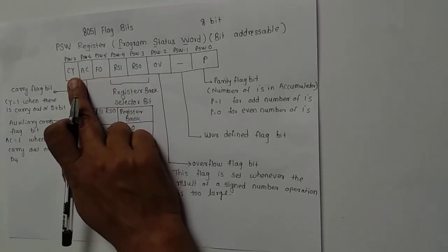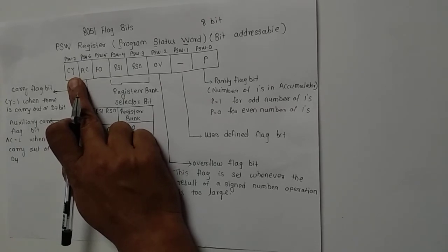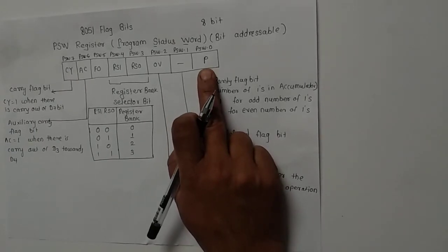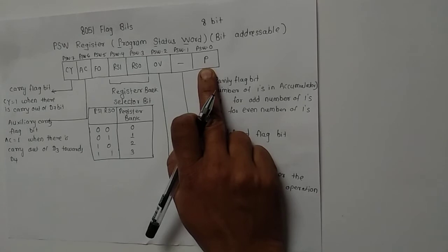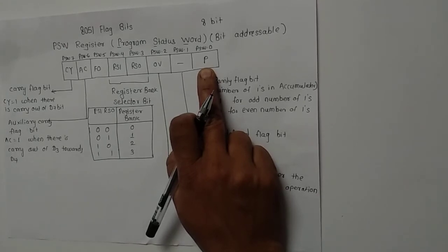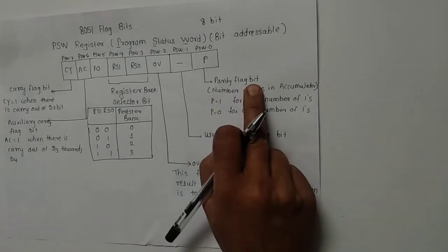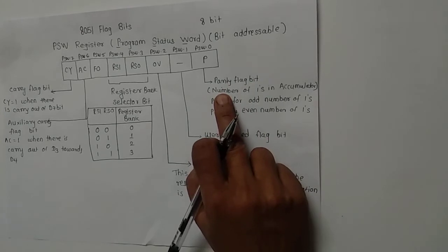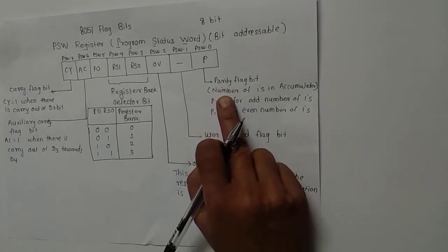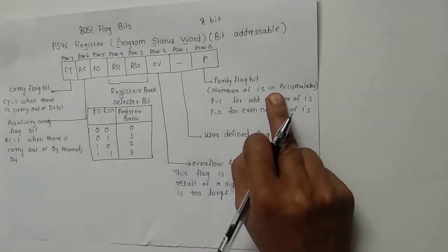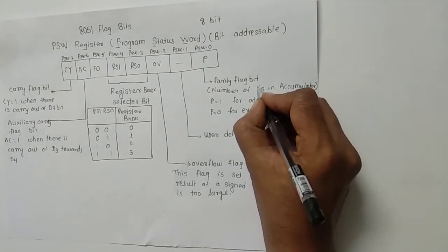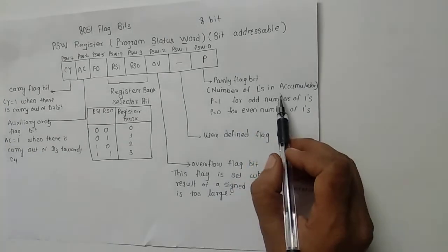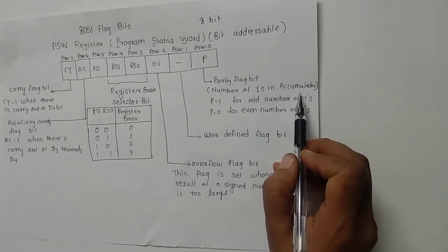Now let us look at the pin function of each bit. The 0th bit is the parity flag bit. The parity shows the number of ones in the accumulator. So here we have to check what is the number of ones in the accumulator.